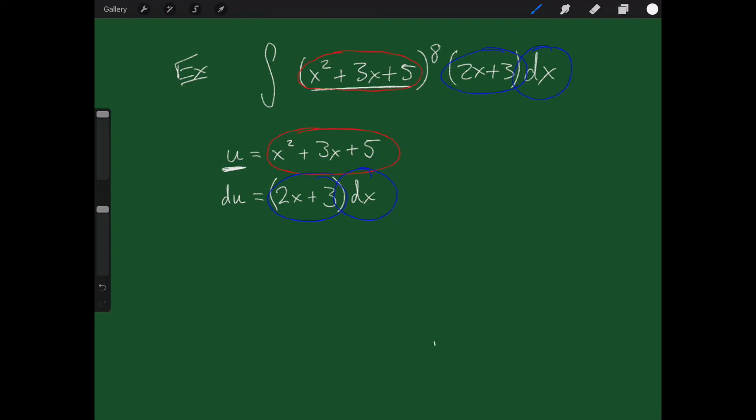So what is x² + 3x + 5? That is otherwise known as u. So I got the integral of that thing in red is u, but I've got u to the 8th power. And the 2x + 3 dx, all the blue stuff, that is otherwise known as du. So instead of having this big nasty integral, I've reduced it down to the integral of u⁸ du.